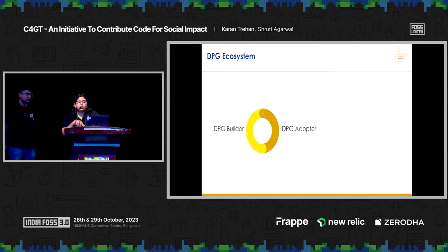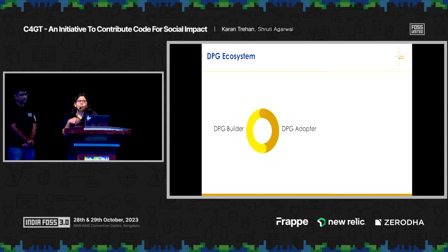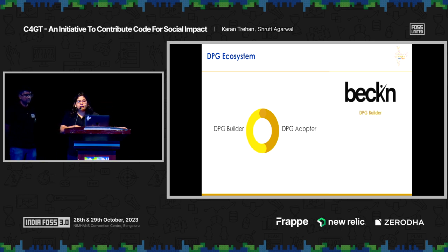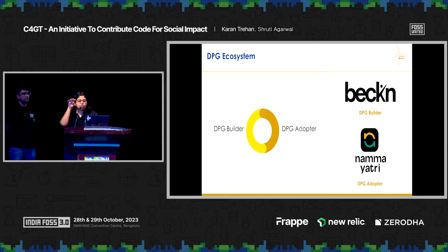Organizations that build digital public goods are known as DPG builders, whereas organizations — or individuals — that choose to implement, utilize, or integrate DPGs are known as DPG adopters. A common example is Beckin, which is a DPG used by JustPay to make the Namayatari application, built on the common network standards defined by ONDC, which is in turn built on Beckin.